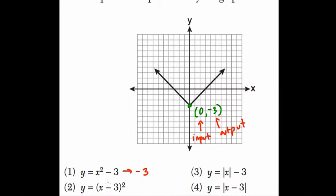2 does not work because 0 minus 3 is negative 3 squared is 9. We need to get negative 3. 3 could work because 0 minus 3 is negative 3. So far, so good.